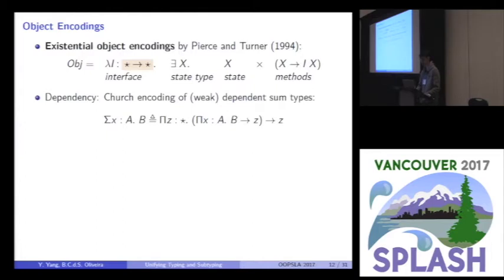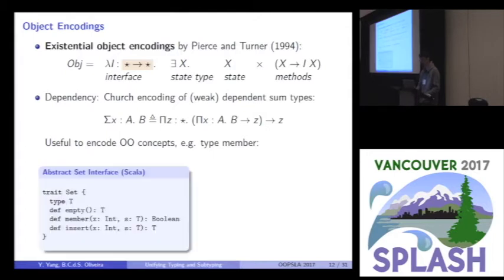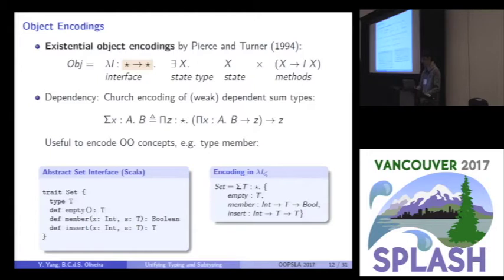And to allow such encoding, we need some dependencies. For example, we need to use the church encoding of weak dependent sums. It looks like this. And this is quite useful, this dependency, because we can encode some OO concepts, like the type member. For example, in the left part is the abstract set interface written in Scala. The type T here is the type member in the trait set. And we can do this encoding using these dependent sum types in our calculus. You may notice that this T is now the quantifier here.